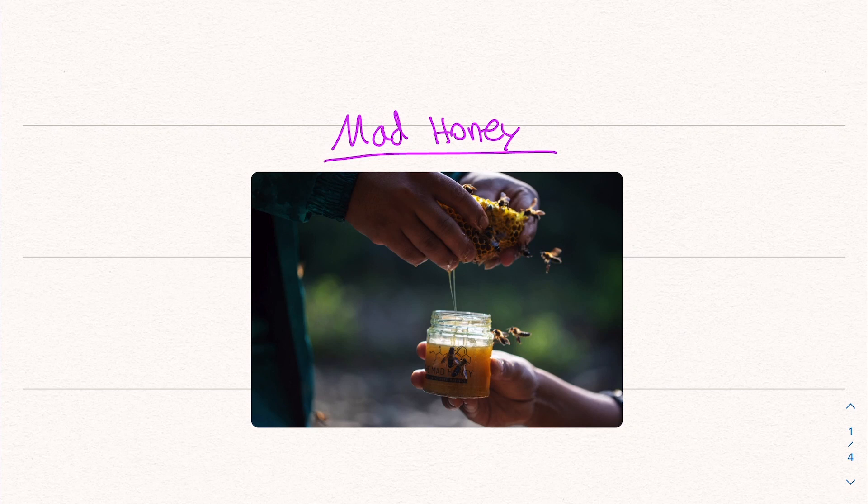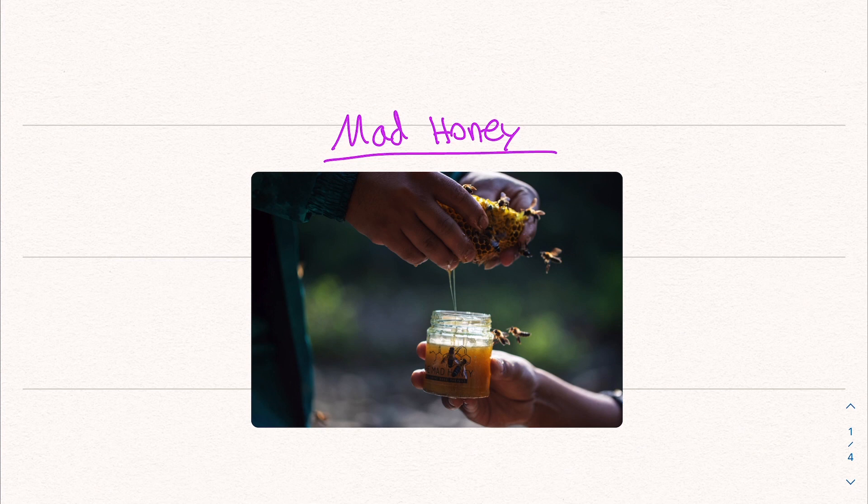Today we're going to talk about mad honey. It's a very interesting type of honey that results in things like hallucinations, intoxication, and other interesting effects. We're going to learn about what it is, how it works, and get a general overview on this really interesting natural product. So let's get into it.